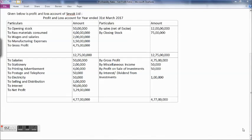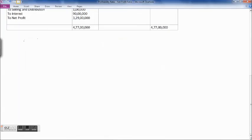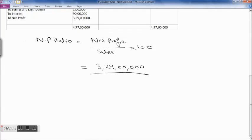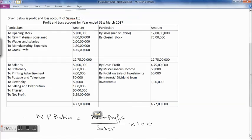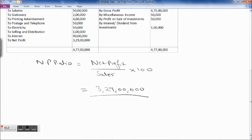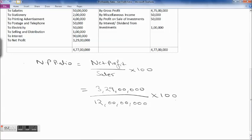Now we will find out what is the net profit ratio. Net profit ratio equals net profit upon sales into 100. So the net profit is 3 crores 29 lakhs upon sales which is 12 crores, into 100. That comes to 27.41 percentage.